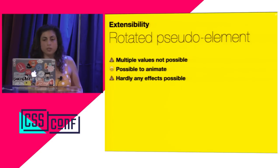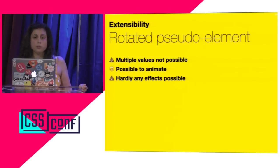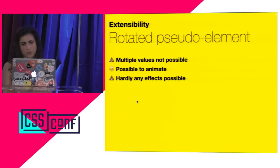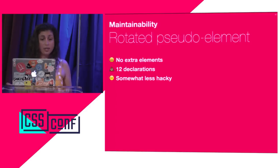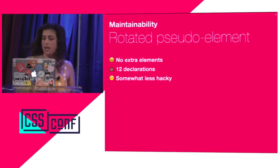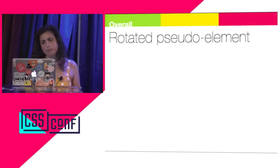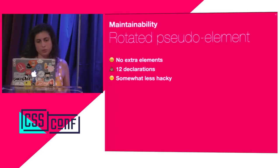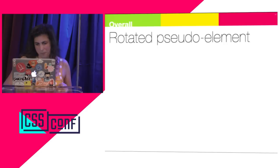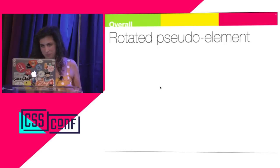So the rotated pseudo-element solution: I can change the colors pretty easily, the size pretty easily, the value with just one edit. I can set the value inline, because even though the animation is in a pseudo-element, I can set it on the main element and have the pseudo-element inherit it. Unfortunately, it's not possible to do multiple values due to the way things uncover. It is possible to animate. It would be difficult to do gradients or patterns. No extra elements needed, but still quite a lot of code — somewhat less hacky than before.